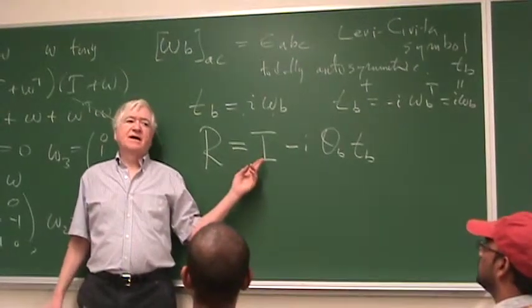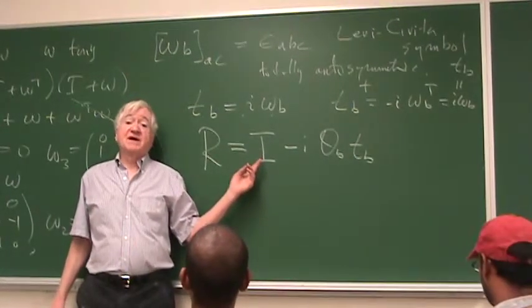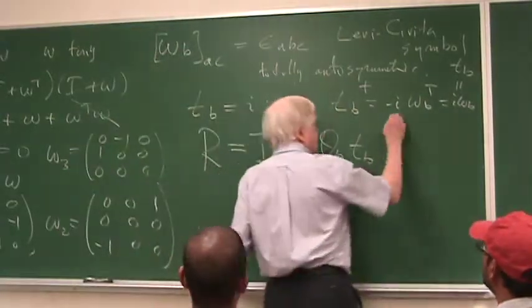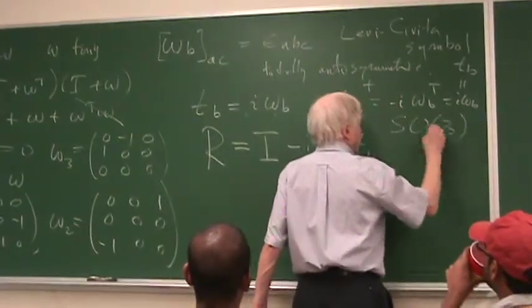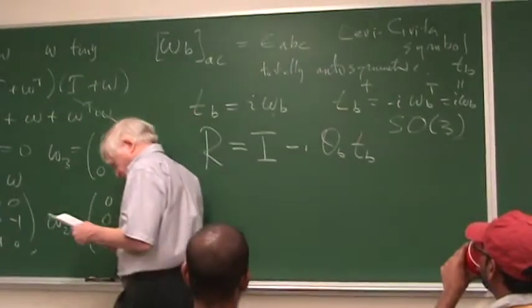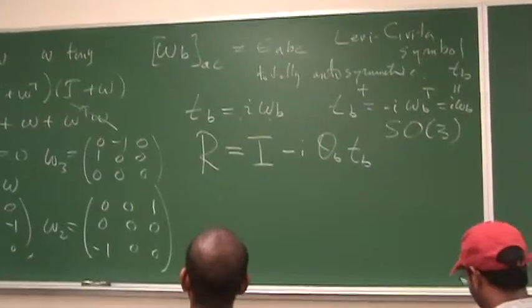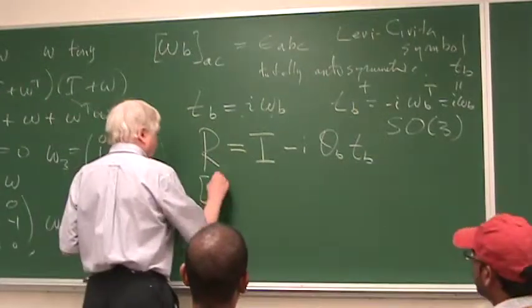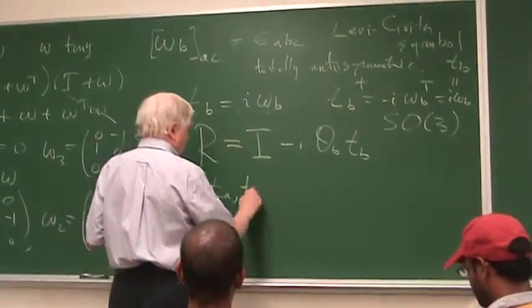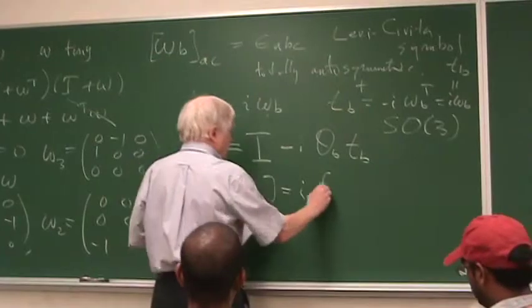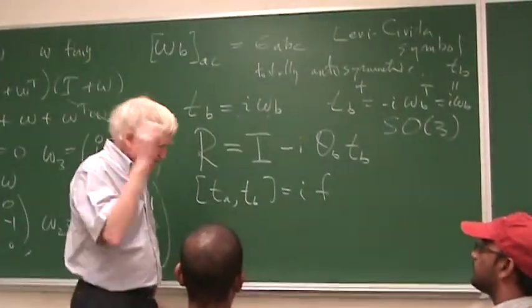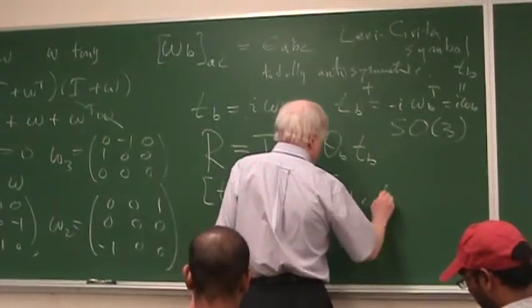Where the T_B's are just I times the omegas. These are the matrices that are close to the identity. Since they're close to the identity, and they have to have a determinant of 1 or minus 1, they obviously have a determinant of 1. So we're talking about SO3. And these T's, for compact groups, as I said, it's totally anti-symmetric.